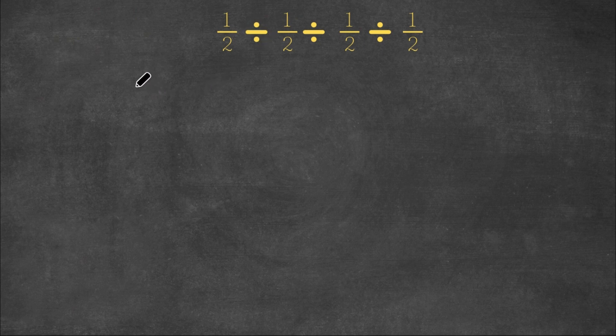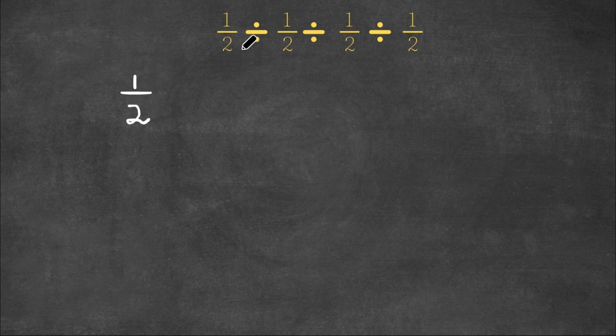So remember, when we're dividing fractions, we first change the division sign to a multiplication sign, and then we flip the places of the numerators and the denominators of the number that is being divided by.